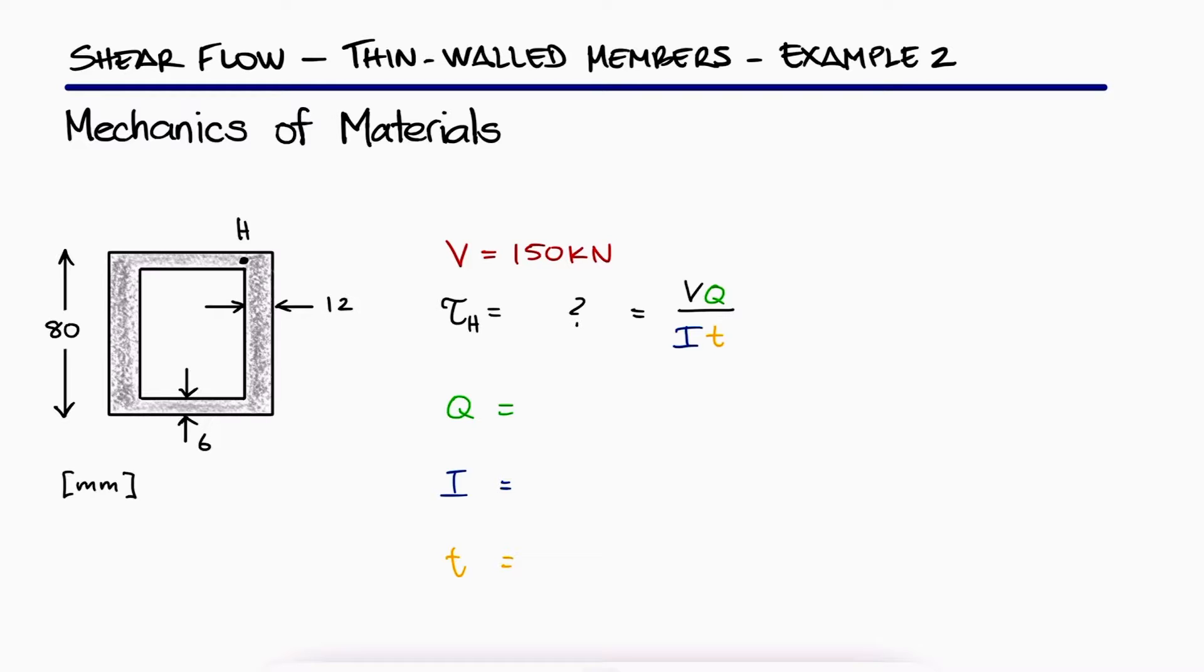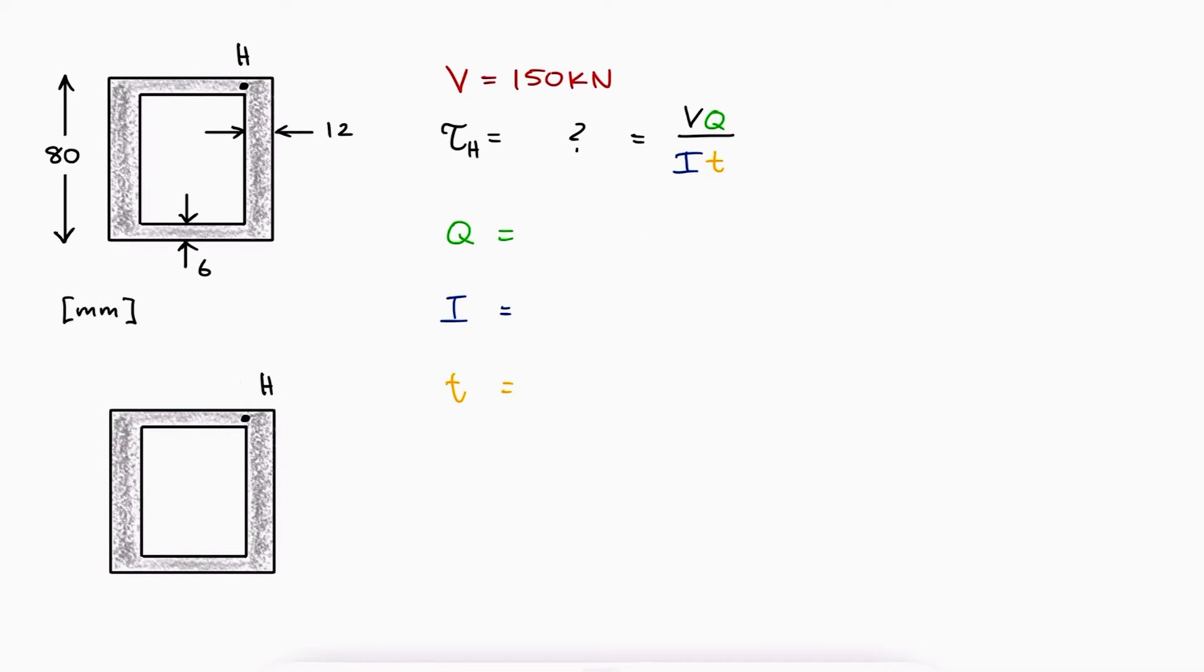Just like it was explained during the main video, we know that the stress at h will be the same as the stress on the opposite side. A cut through h all the way to the bottom would not work to find the shearing stress at h because with that cut, the shearing stresses would cancel out and we would obtain a value of 0.